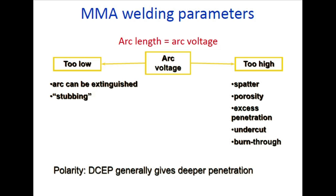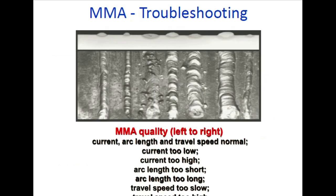Arc length equals arc voltage. If arc length is too low, the arc can be extinguished or the electrode can stub (starve) - requiring electrode cleaning and re-welding. If arc length is too high: spatter, porosity, excess penetration, undercut, and burn-through occur. In general, deeper penetration polarity affects these results.